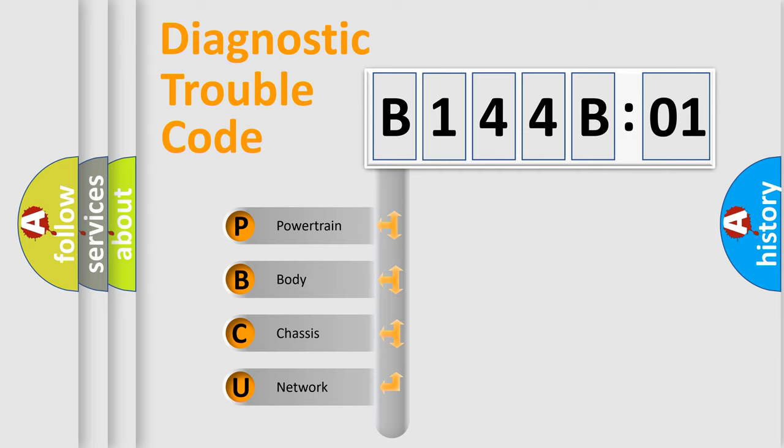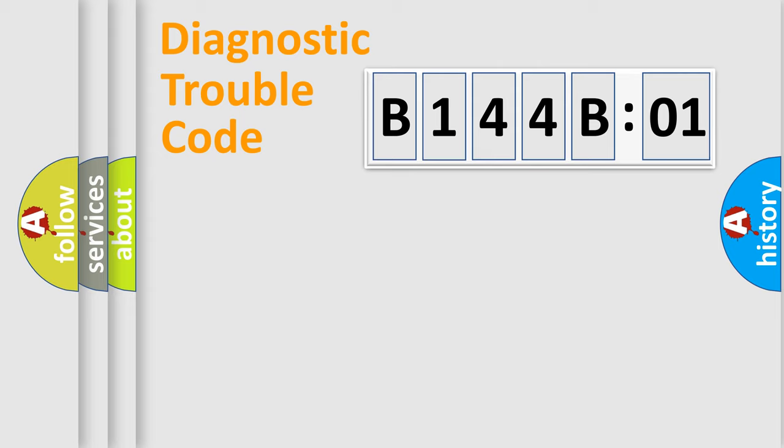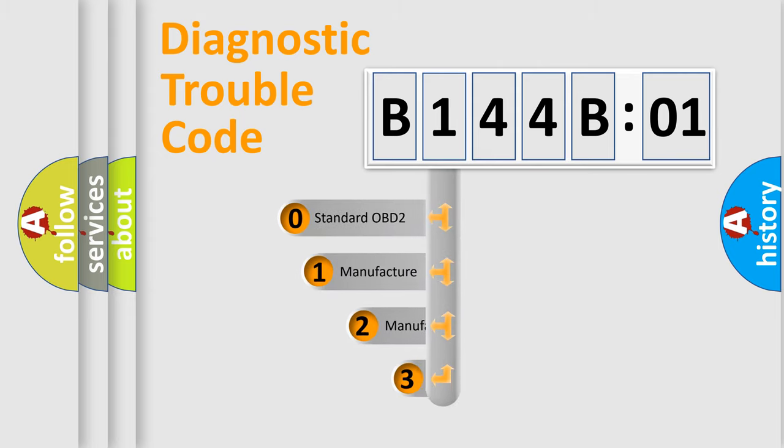We divide the electric system of automobile into four basic units: Powertrain, body, chassis, network. This distribution is defined in the first character code.